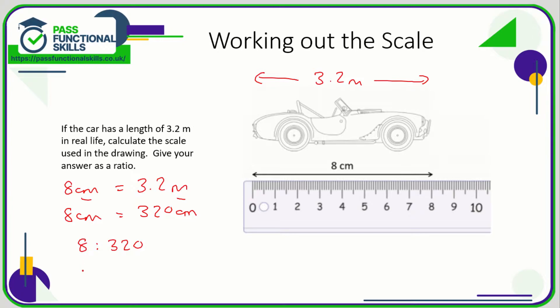But I can simplify this ratio. I've got two even numbers here, so that can be simplified to 4 to 160. I've still got two even numbers, so I'm going to turn that into 2 to 80. And I've still got two even numbers, so the scale can be simplified to 1 to 40.